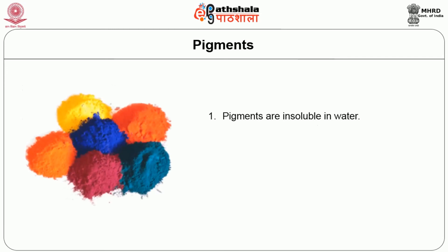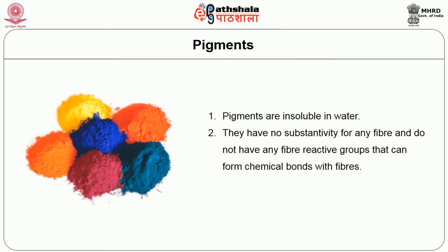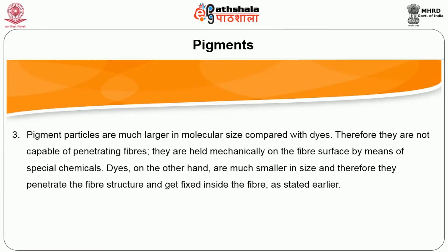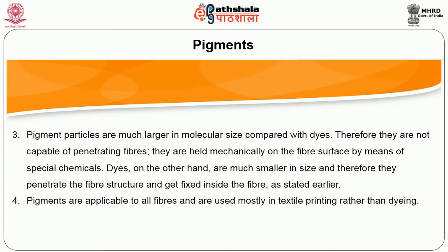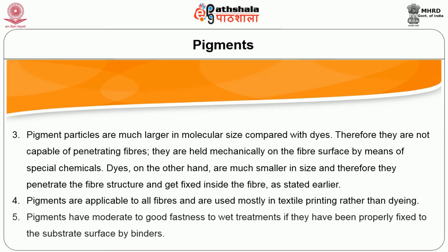Another coloring method uses pigments. Pigments are insoluble in water. They have no substantivity for any fiber and do not have any fiber-reactive groups that can form chemical bonds with fibers. Pigment particles are much larger in molecular size compared with dyes, and therefore they are not capable of penetrating fibers. They are held mechanically on the fiber surface by means of special chemical binders. Dyes, on the other hand, are much smaller in size and therefore penetrate the fiber structure and get fixed inside the fiber. Pigments are capable of being applied to all fibers. They are used mostly in textile printing rather than dyeing. Pigments have moderate to good fastness to wet treatment when properly fixed to the substrate surface by binders.